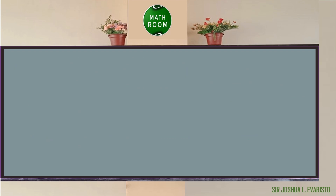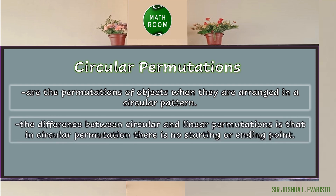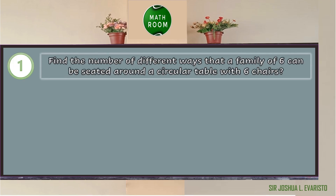Aside from linear permutations, we also have circular permutations. Circular permutations are the permutations of objects when they are arranged in a circular pattern — an example is a seating arrangement of people around a circular table. The difference from linear permutation is that in circular permutation there is no starting or ending point. The formula is P = n! / n, or equivalently P = (n − 1)!.